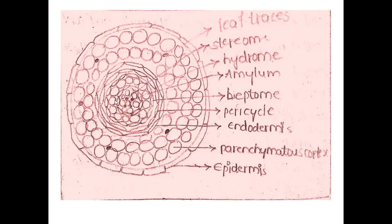Below the amylam, hydrome tissues are present. The hydrome tissues mainly help in the translocation of organic substances and minerals to the total plant body of polytrichum.